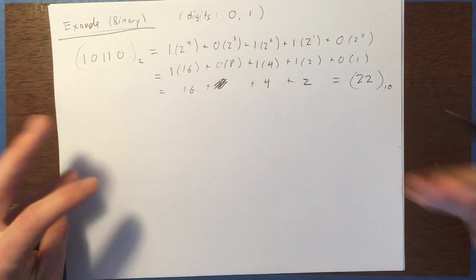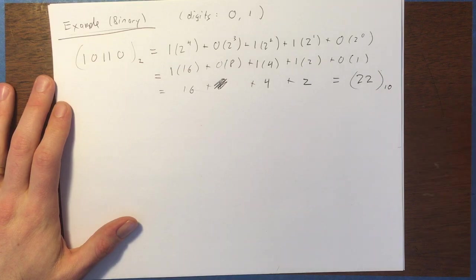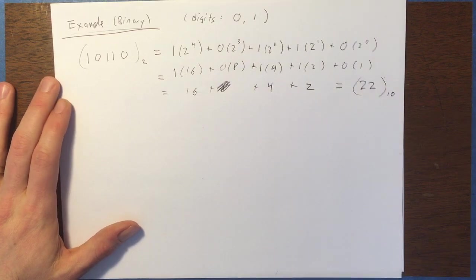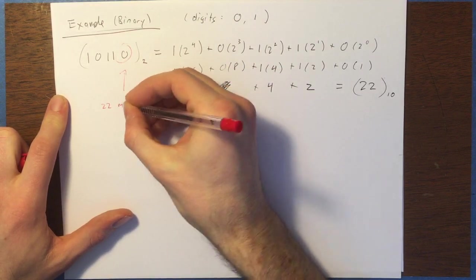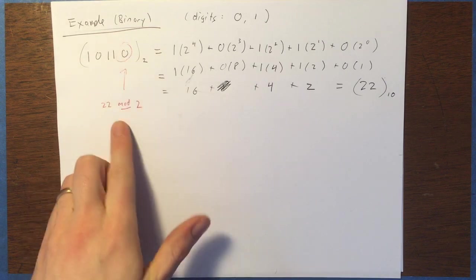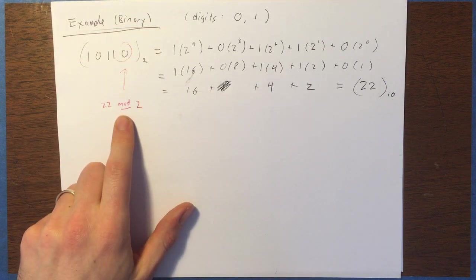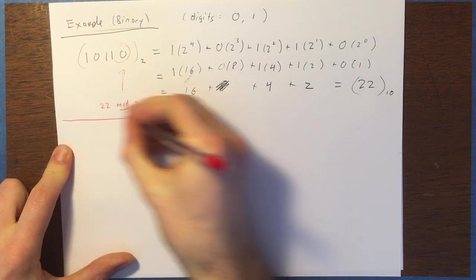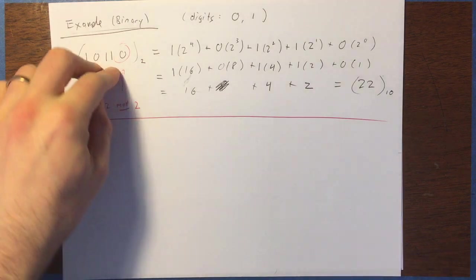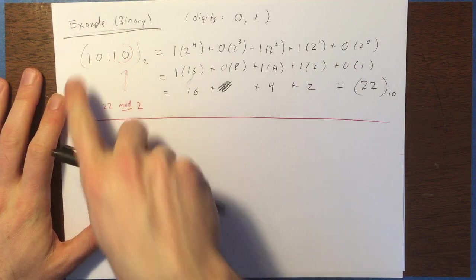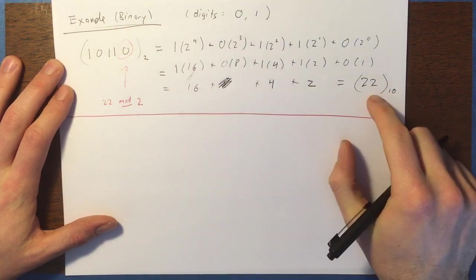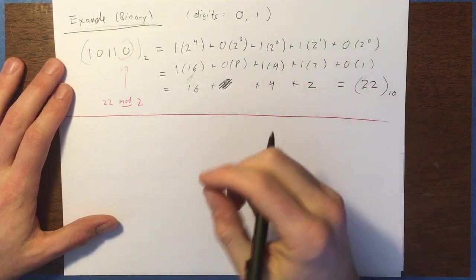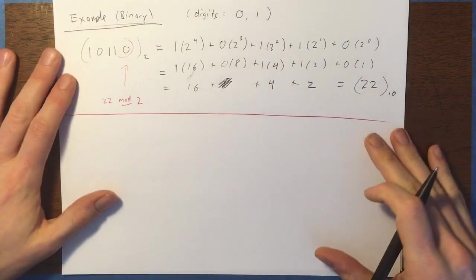So if you take a number and mod 2 — take the remainder when dividing by 2 — that corresponds to whether it's even or odd: 0 if it's even, 1 if it's odd. So the last digit here is going to be the number mod 2 — it's the remainder you get after division by 2. And from this, we're going to develop an algorithm for converting the other way.